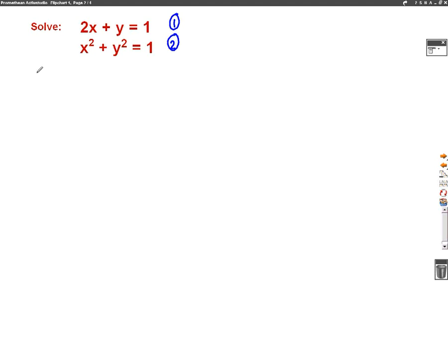Then what we're going to do is rearrange number 1. So number 1 is 2x plus y equals 1. I'm going to change that so it says y equals. So to do that, I'm going to take the 2x over to the other side. So we end up with y equals 1 minus 2x.